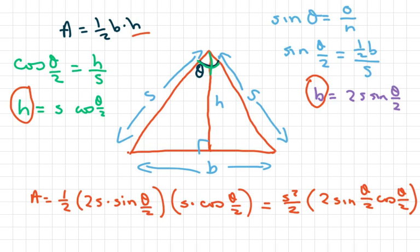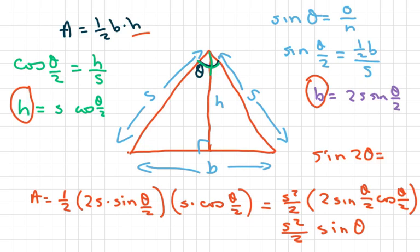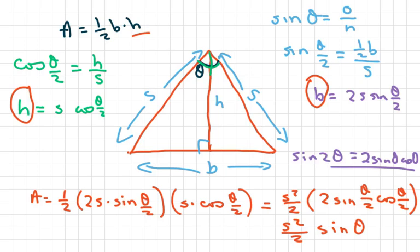This is your double angle identity for sine. So when I simplify, since we have 2 sine of theta over 2 times cosine of theta over 2, I get S squared over 2 times sine of theta. Remember, the double angle identity is: sine of 2 theta equals 2 sine of theta cosine of theta. I'm just using this format and simplifying.